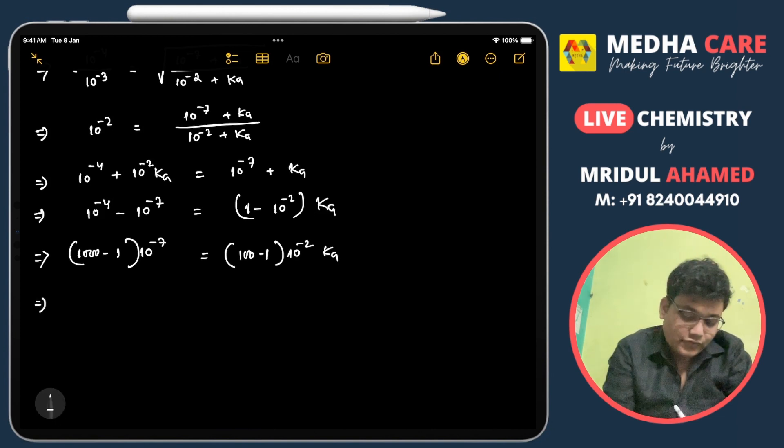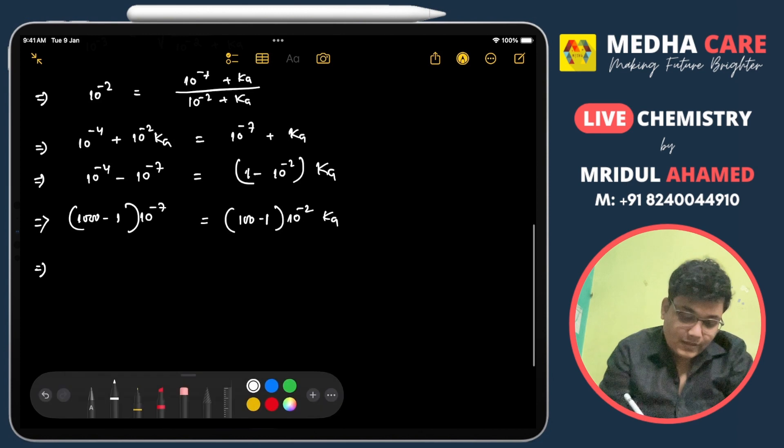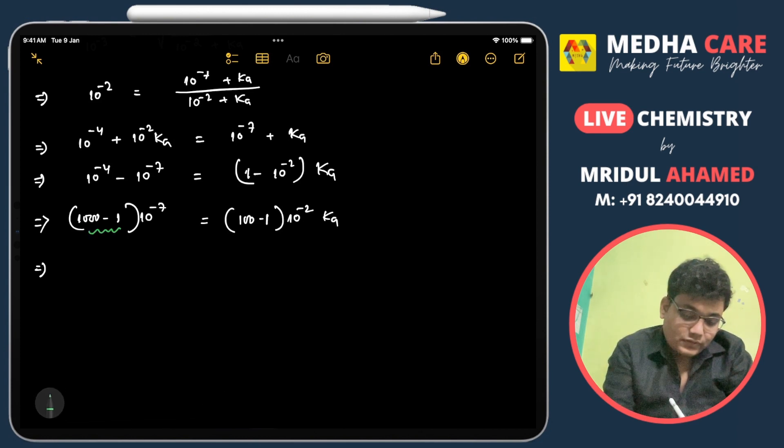So from here, (1000 minus 1) I will consider as only 1000, so I will neglect 1 from here and also neglect 1 from here. Then it will be 10^-4 and here it will be Ka approximately.